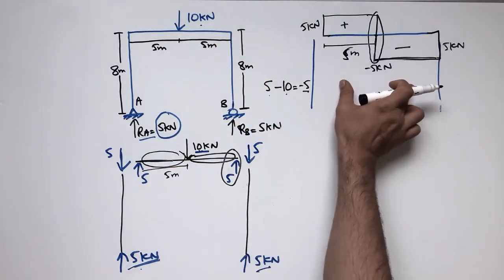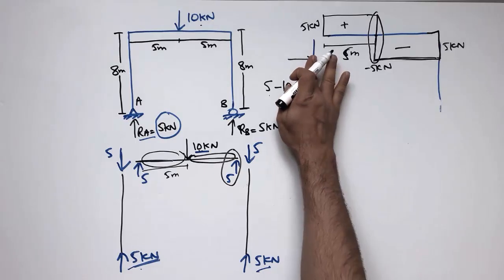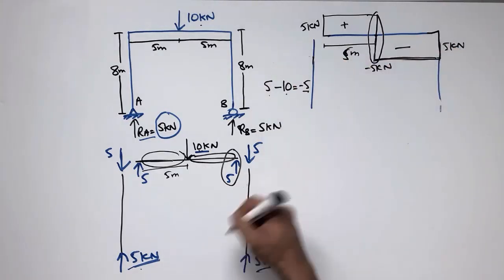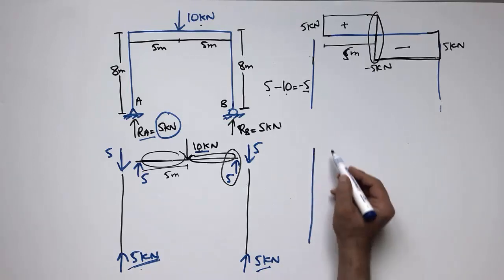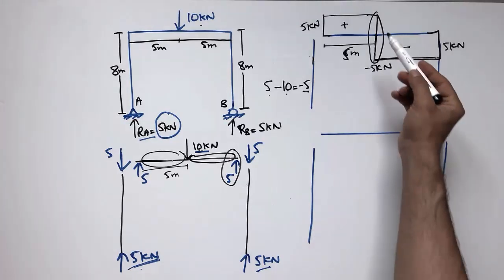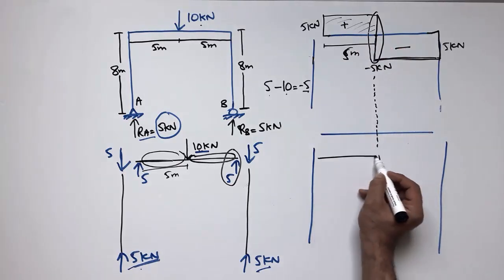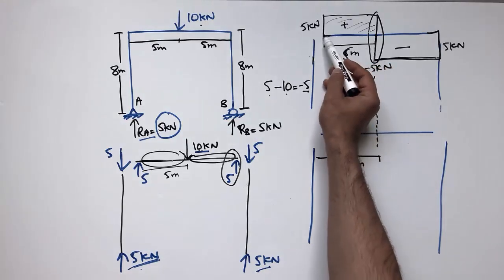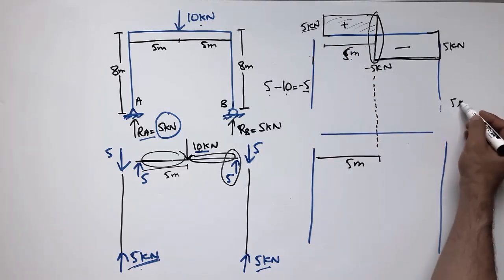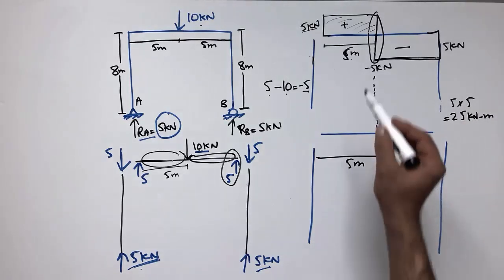There is no shear force diagram for the columns since no lateral force acts on them. To draw the bending moment diagram, I again draw the reference lines. The bending moment can be found from the shear force diagram by calculating the area under it. The shear force diagram shows a rectangle with a height of 5kN and a length of 5 meters.